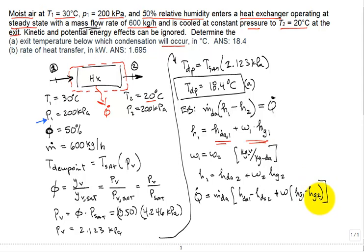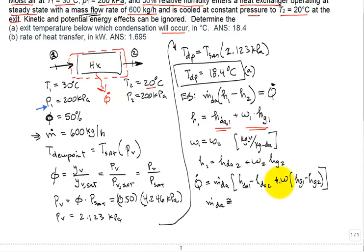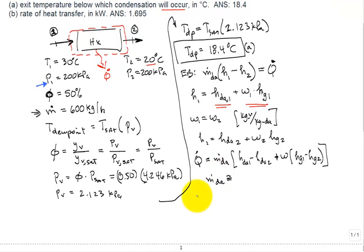A little bit of work here we have to do. What is the mass flow rate of the dry air? Well, as a very good approximation, it would be very close to 600 kilograms per hour. But if I'm really tedious, what I need to calculate is omega and then adjust for it. Let me do that. So what is my omega, my humidity ratio, at state 1? Well, the equation is 0.622 times the partial pressure of the vapor coming in at 1 divided by the total gas pressure minus the partial pressure of the vapor coming in at 1.